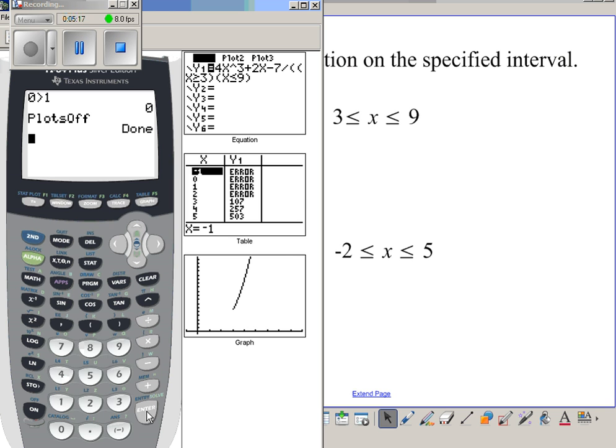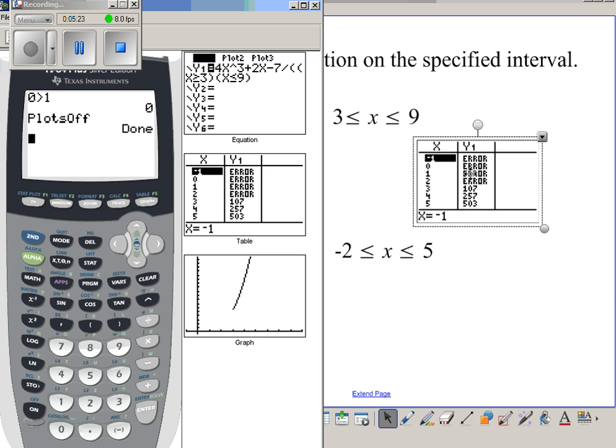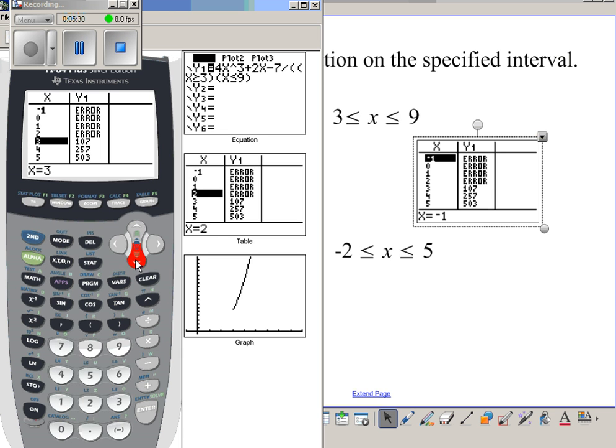When I look in my table, things before 3 do not enter. And if I go in my table lower, things after 9 also will give me an error message.